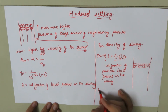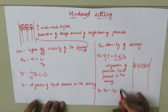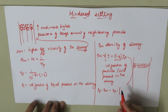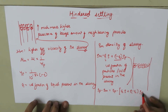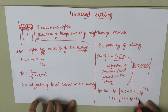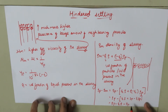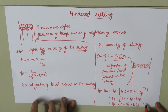If we take the difference between the density of the particle minus the density of the slurry, we get: rho_p minus (epsilon times rho plus (1 minus epsilon) times rho_p), which simplifies to epsilon times (rho_p minus rho).